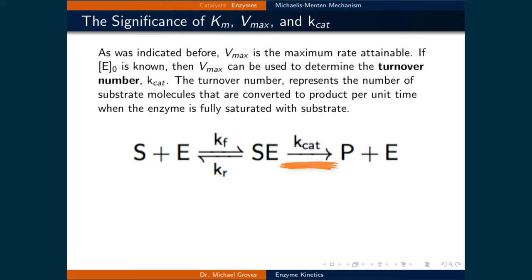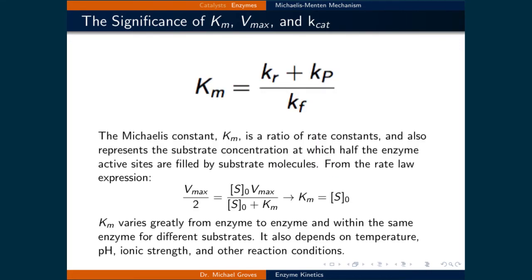Recall that the Michaelis constant, Km, is a ratio of the three rate constants involved in this mechanism. It also represents the substrate concentration at which half the enzyme active sites are filled by substrate molecules. Another way to put this is Km is equal to the initial concentration of S when the reaction is operating at half the maximum rate. To show this, we start with the rate law expression and set the rate to be half the maximum rate. We can then solve for the Michaelis constant and find that it is equal to the initial concentration of the substrate.